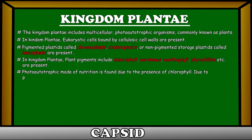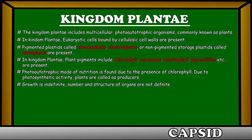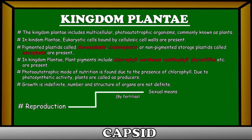Photo-autotrophic mode of nutrition is found due to the presence of chlorophyll. Due to photosynthetic activity, plants are called producers. Growth is indefinite, and the number and structure of organs are not definite.